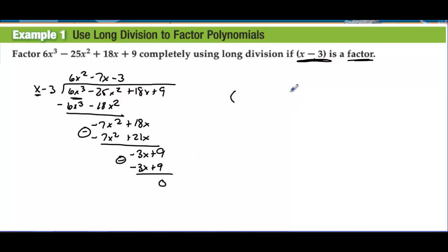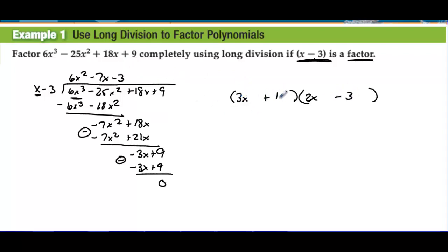Now we just have to factor what remains. We have 3x and 2x, which gives us 6x². I need to get negative 7 out of this, so we use negative 3 and plus 1 — factors of negative 3. So we have 3x plus 1 times 2x minus 3 times x minus 3, and there we have this polynomial completely factored.